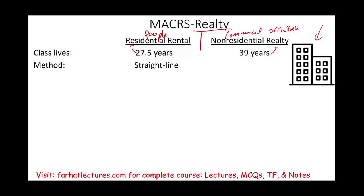The method of depreciation we're going to be using is straight-line — versus if you remember, under the half-year and the mid-quarter, we used the double declining balance, the 200% or the 150%. And we are going to assume a mid-month convention, not a mid-year, not a mid-quarter. For real property, we're going to be using mid-month.